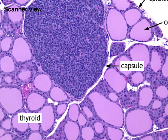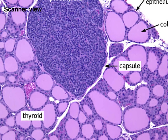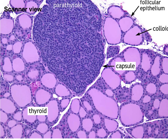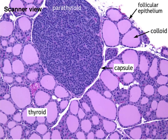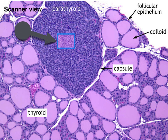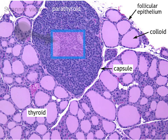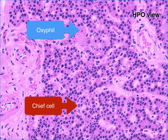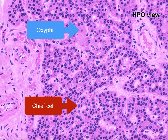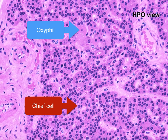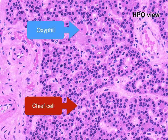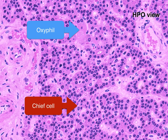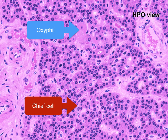Under the scanner view, we can see the parathyroid embedded in the thyroid gland. It is separated from the thyroid gland by a connective tissue capsule. Under HPO, we can see two types of cells. The more numerous are PTH-producing chief cells, as shown by the red arrow. They are characterized by pale cytoplasm and central nuclei. On the other hand, the much lighter cells are known as oxyphil cells, as shown by the blue arrow. Their function is unknown.